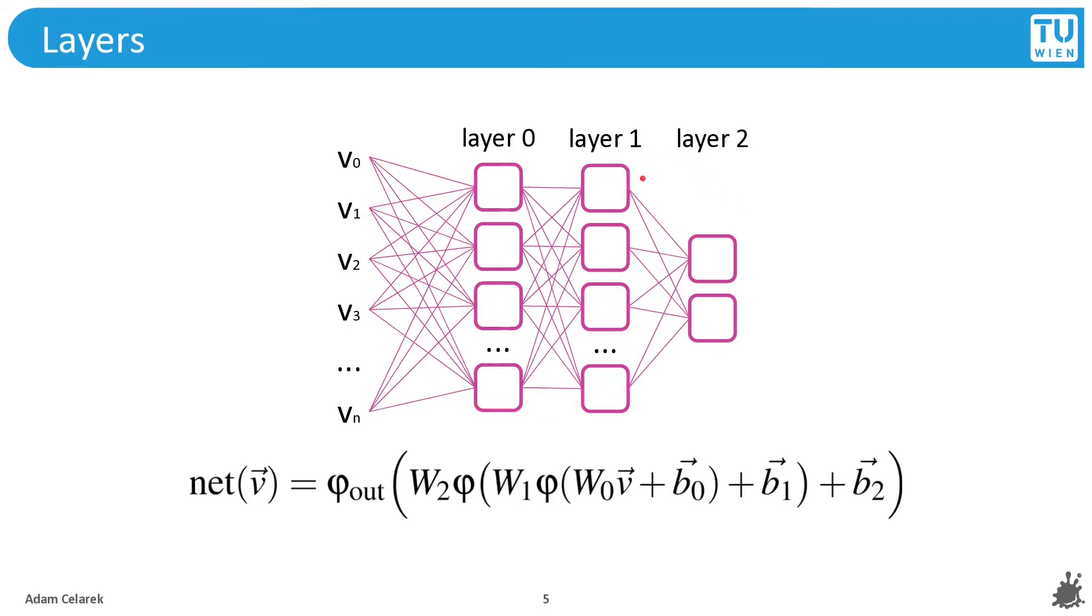Here you can see a fully connected neural network. You see the weights in here. We can write them as a matrix which multiplies the input vector. We then add the bias vector and we apply the transfer function pointwise. Since we have several layers, we have to do this several times.